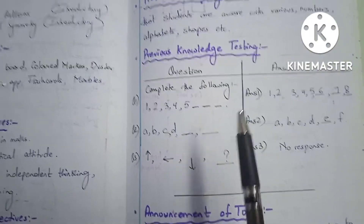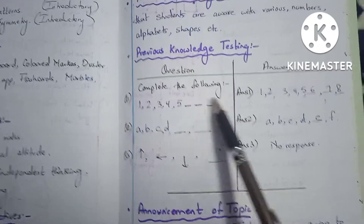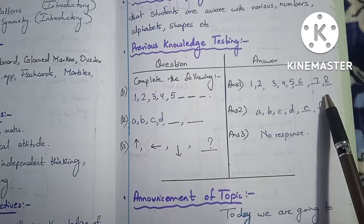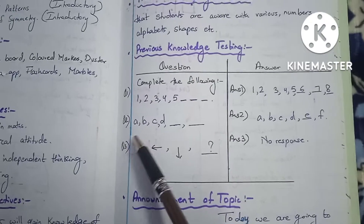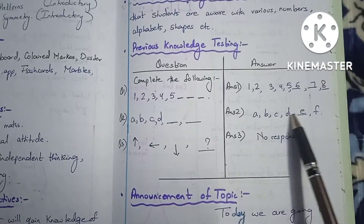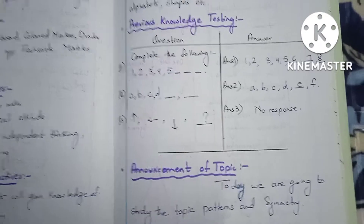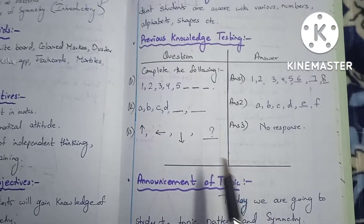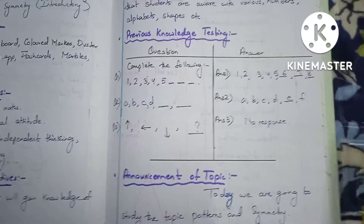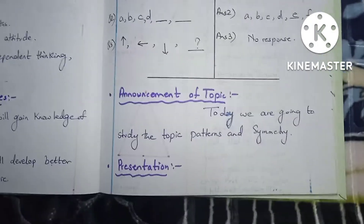For previous knowledge testing, we give them a particular type of pattern. Here I have given them a pattern 1, 2, 3, 4, 5 and told them to complete it. They can complete it. I have also written A, B, C, D and asked all the students to complete it.